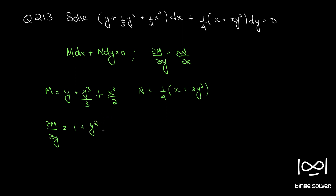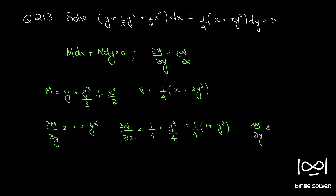The x² term becomes 0 since we are differentiating with respect to y, so ∂M/∂y = 1 + y². And ∂N/∂x = 1/4 + y²/4, which is (1/4)(1 + y²). Since ∂M/∂y is not equal to ∂N/∂x, the given differential equation is not exact.